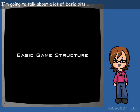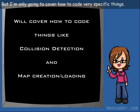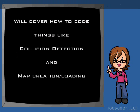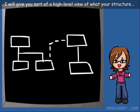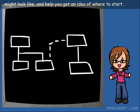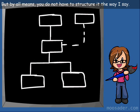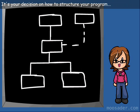I'm going to talk about a lot of basic bits that you're going to need for your game, but I'm only going to cover how to code very specific things. For the structure of your program, I will give you a high-level view of what your structure might look like and help you get an idea of where to start. But by all means, you do not have to structure it the way I say. It's your decision how to structure your program in a way that seems logical to you.